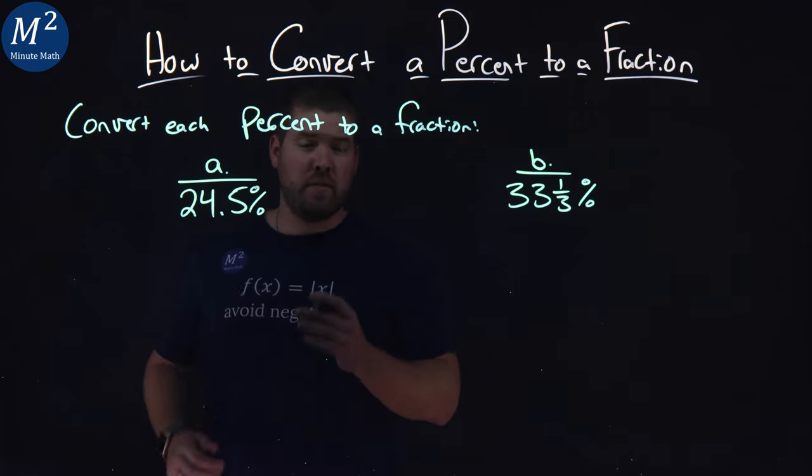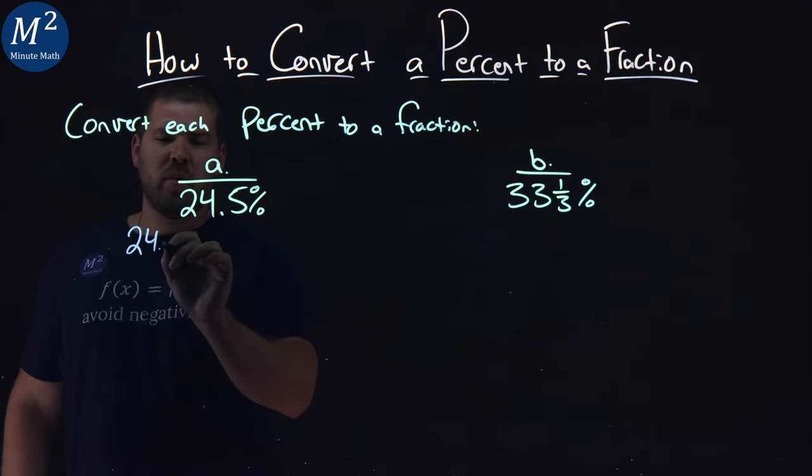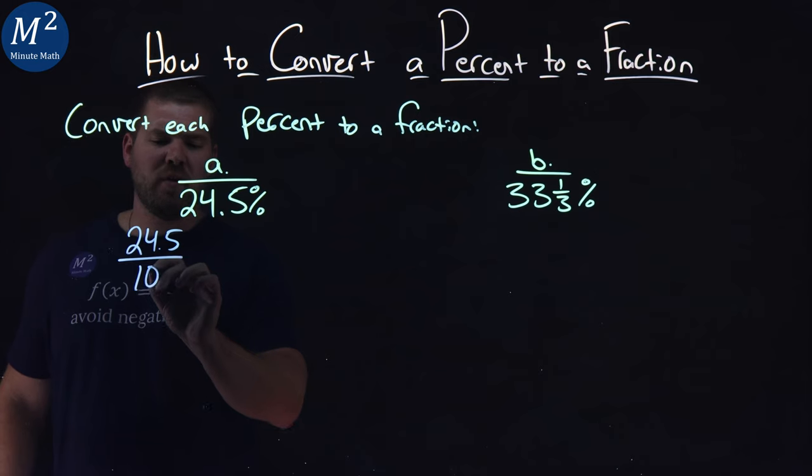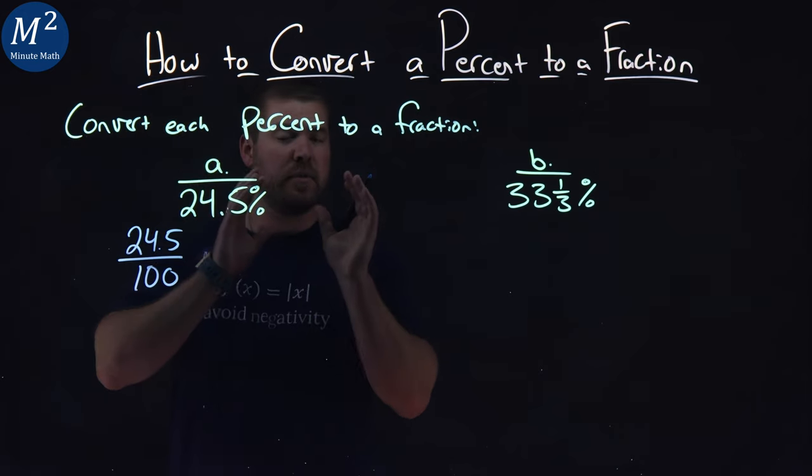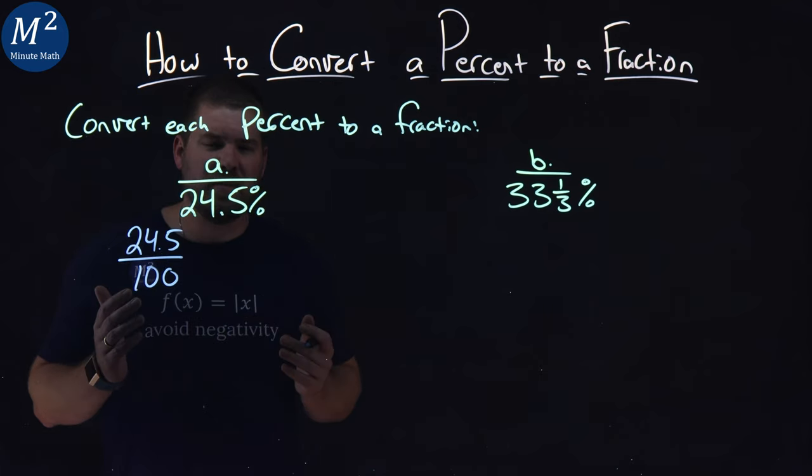Let's deal with the 24.5% first. We rewrite this to be 24.5 over 100, like we always do. We take a percent, we write that over 100, and now we have a fraction, but this isn't simplified.